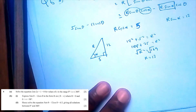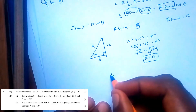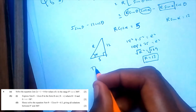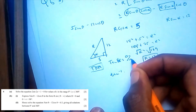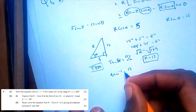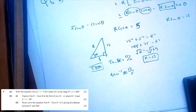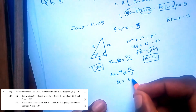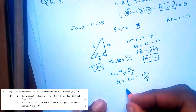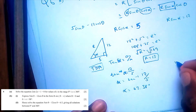To find alpha, we use tan. Using SOH-CAH-TOA, we use TOA. So tan(alpha) equals opposite over adjacent. The opposite is 12 and the adjacent is 5. So alpha equals tan inverse of 12 over 5, which gives alpha equal to 67.38 degrees. So writing it in this form, the answer is 13·sin(θ minus 67.38°).